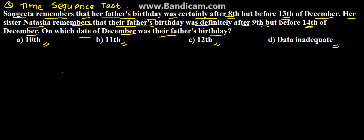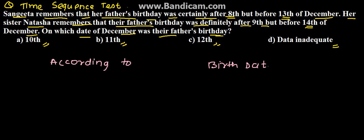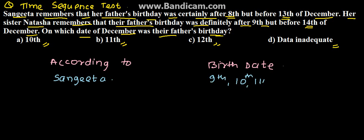According to Sangeeta, the birthday is after 8th but before 13th. So the possible dates are 9th, 10th, 11th, or 12th.